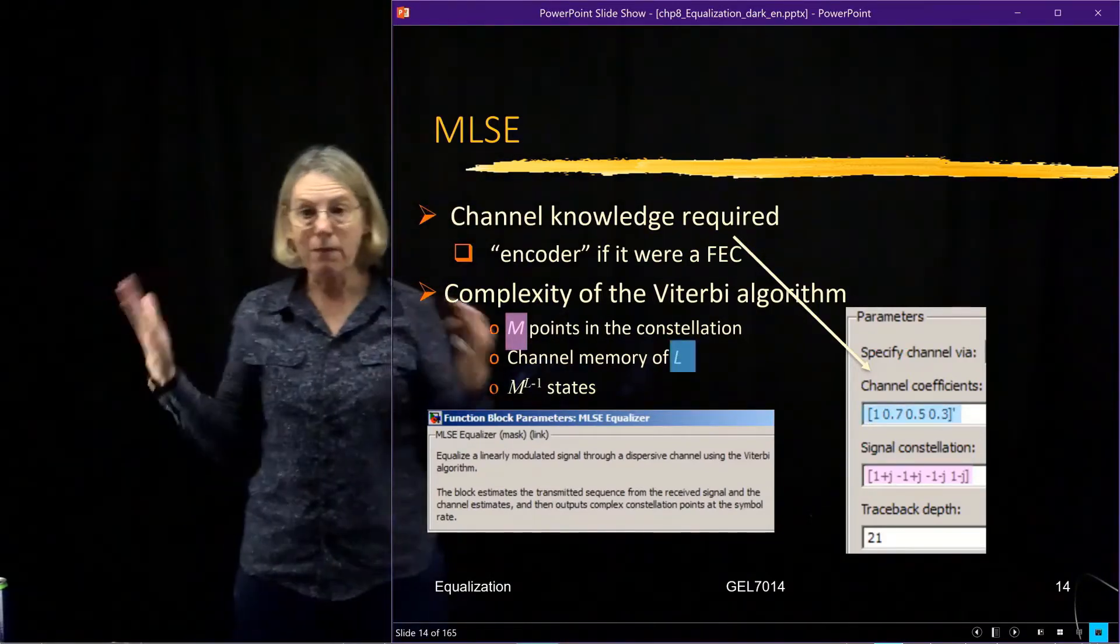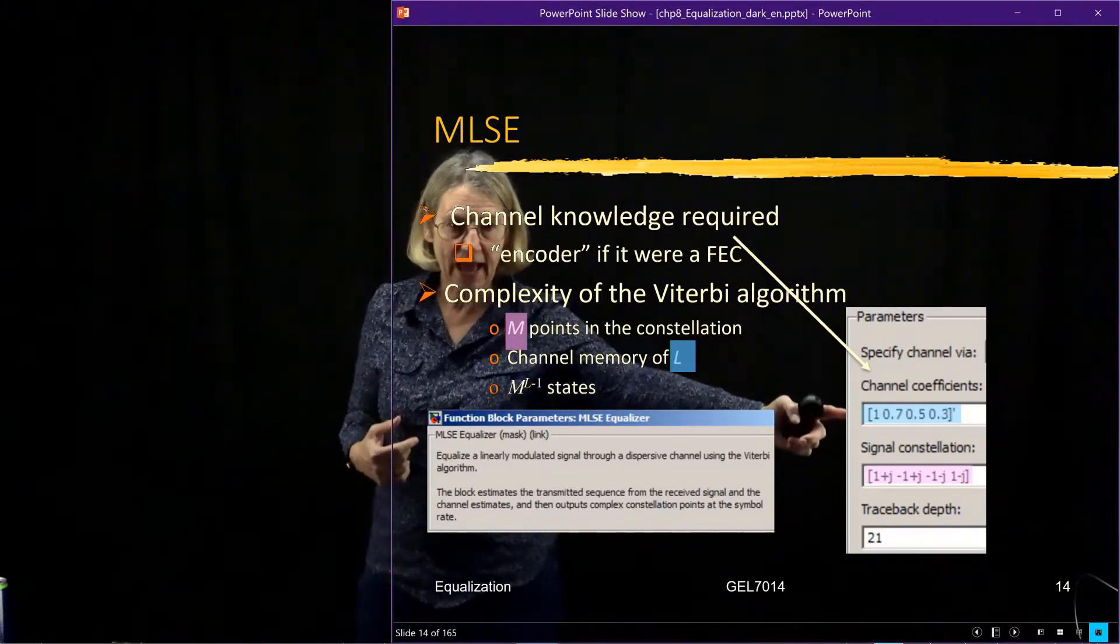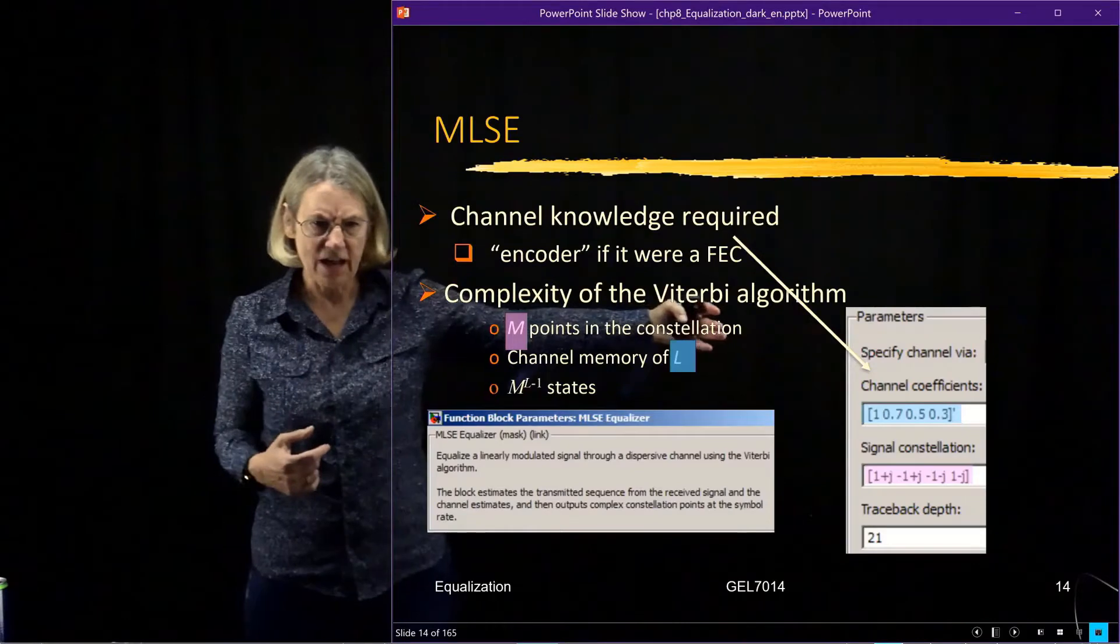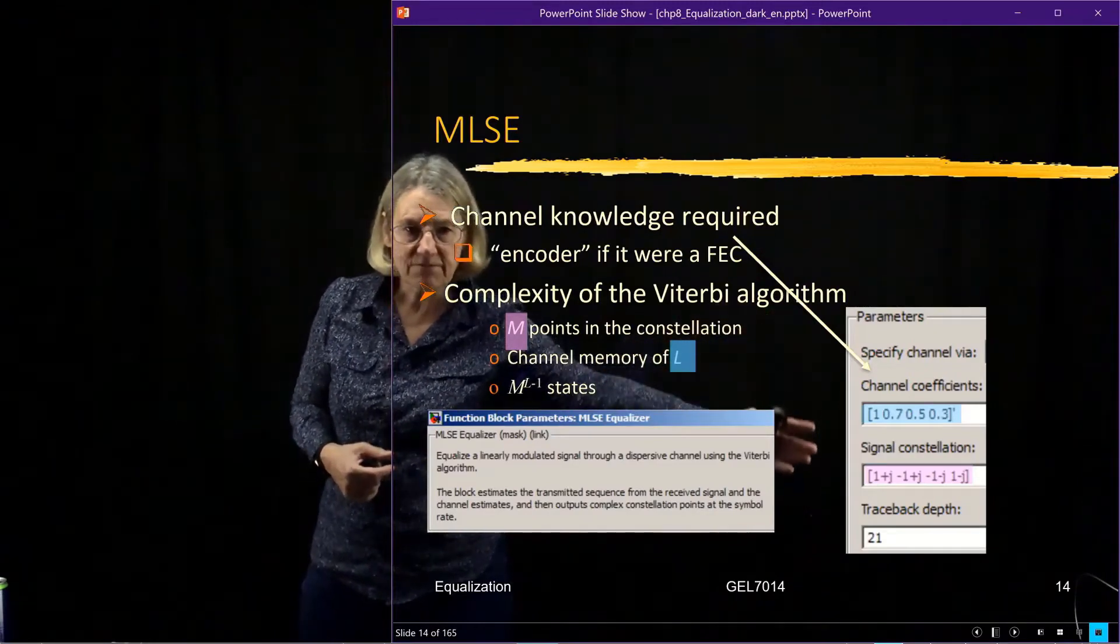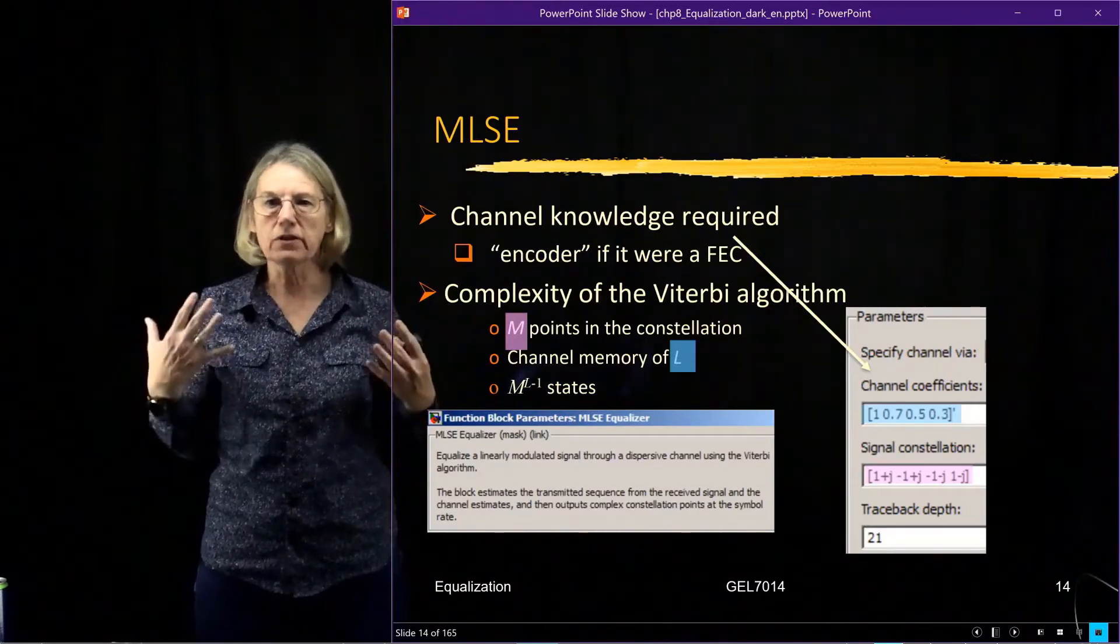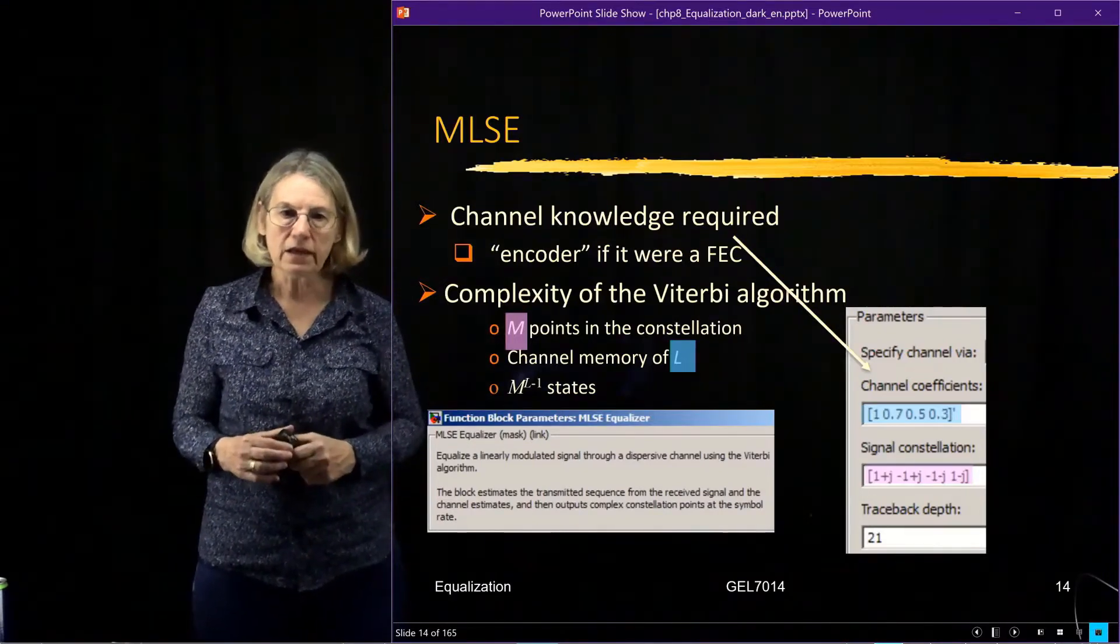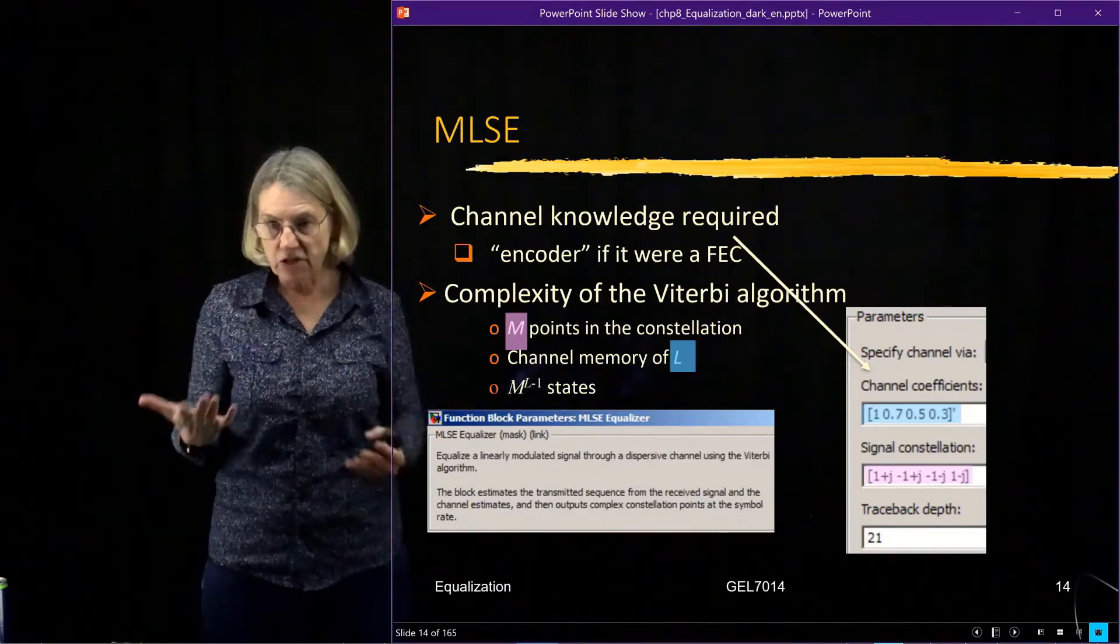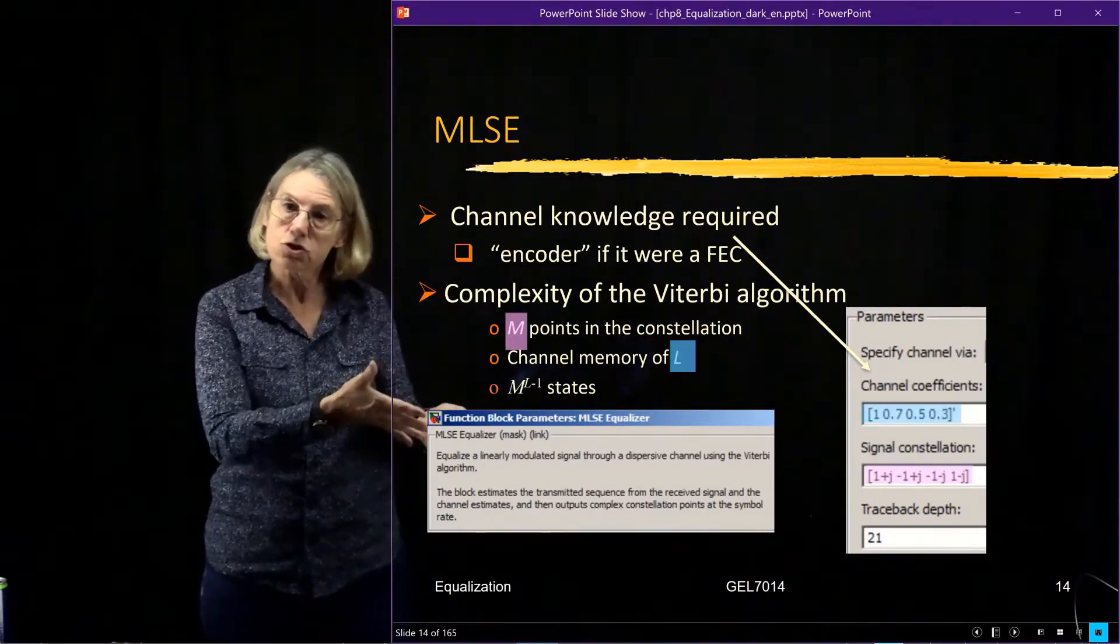Now, we also have to know what's the memory length, how long is the memory of the channel. And of course, here we can see that we have four coefficients in this channel. So there is an extension of three symbol intervals for the memory of the channel. So once you give this information to MATLAB, what MATLAB does is it builds a trellis. It builds a Viterbi algorithm trellis. And the complexity of that trellis goes as m to the L-1, which is the number of states examined in the Viterbi algorithm. And then it executes the Viterbi algorithm. So we're going to look at some results of simulations for some channels using this tool from MATLAB.